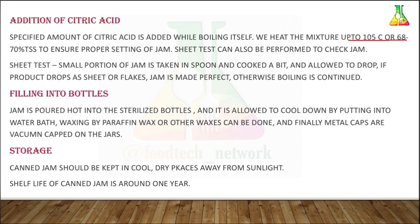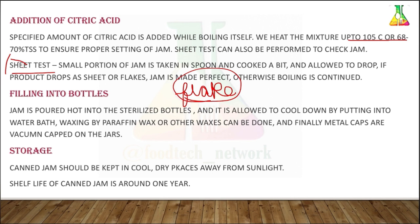After citric acid addition, we perform a test to judge whether the end point is near. This is known as the sheet test or flake test — this is important and can be asked in exams. In this test, a small portion of jam is taken out during boiling on a smooth spoon or wooden ladle and cooled slightly. If the product falls off in the form of a sheet or flake instead of flowing as a continuous stream or syrup, the end point has been reached and the product is ready. Otherwise, boiling is continued until the sheet test is positive.